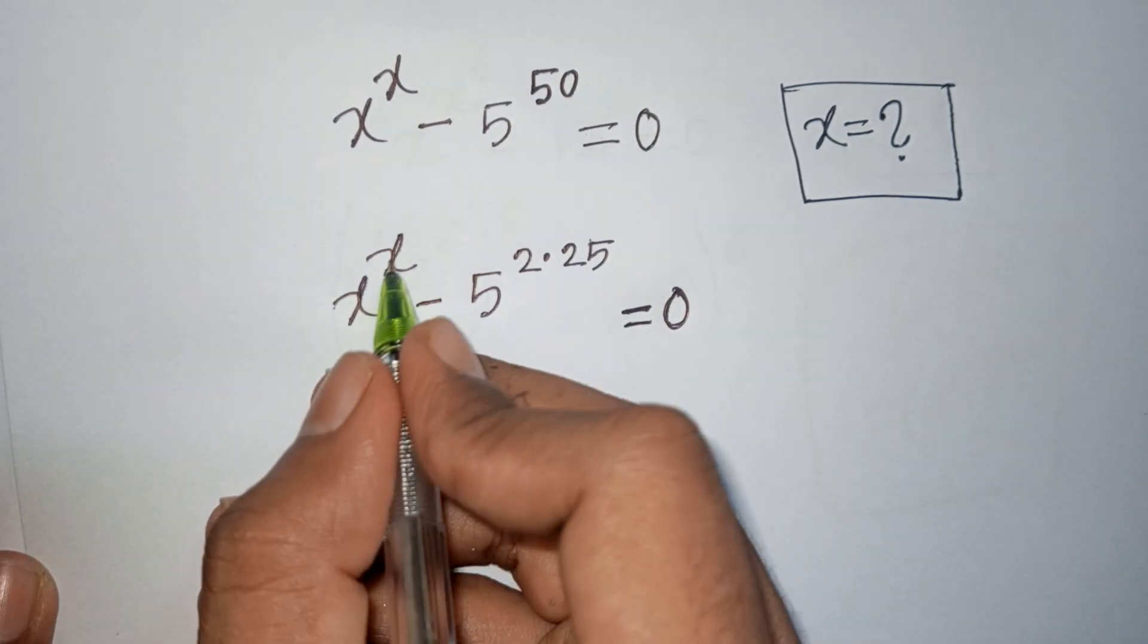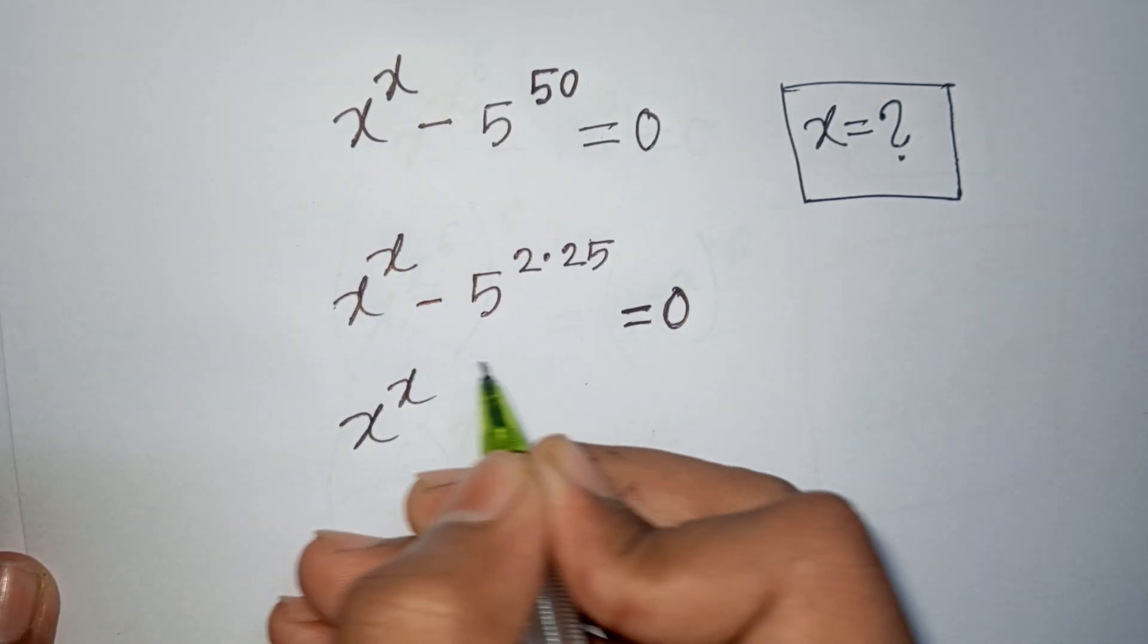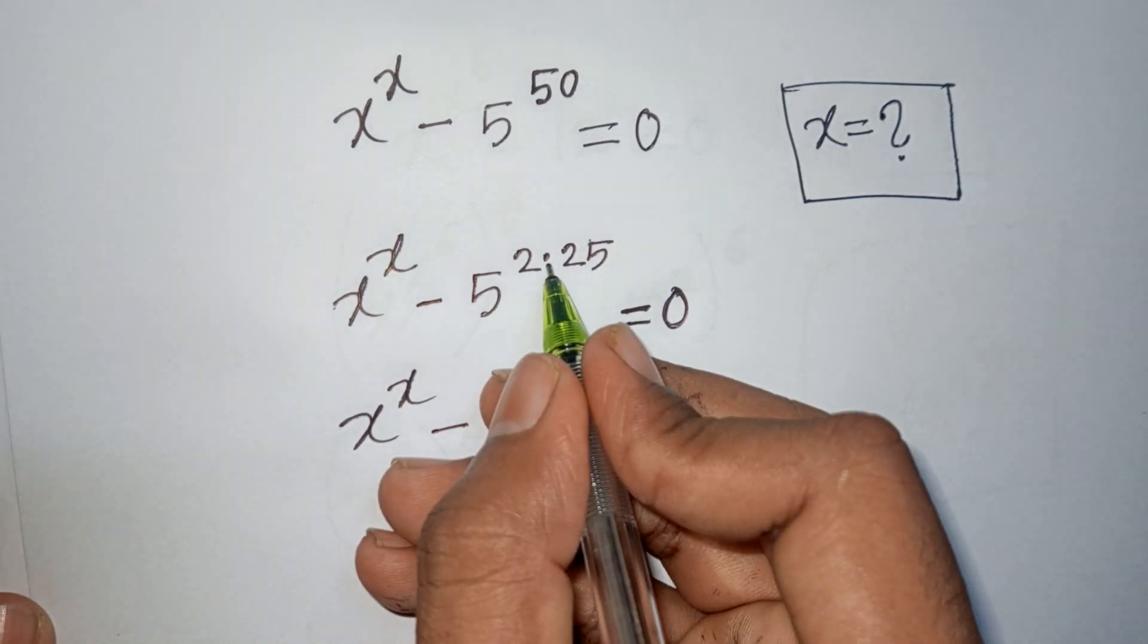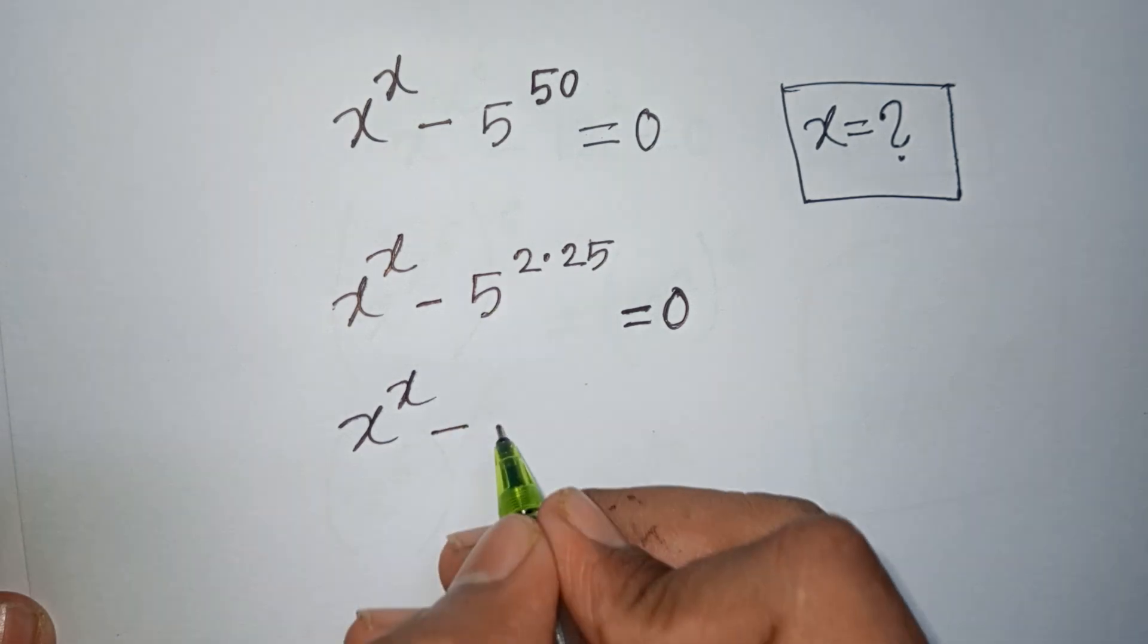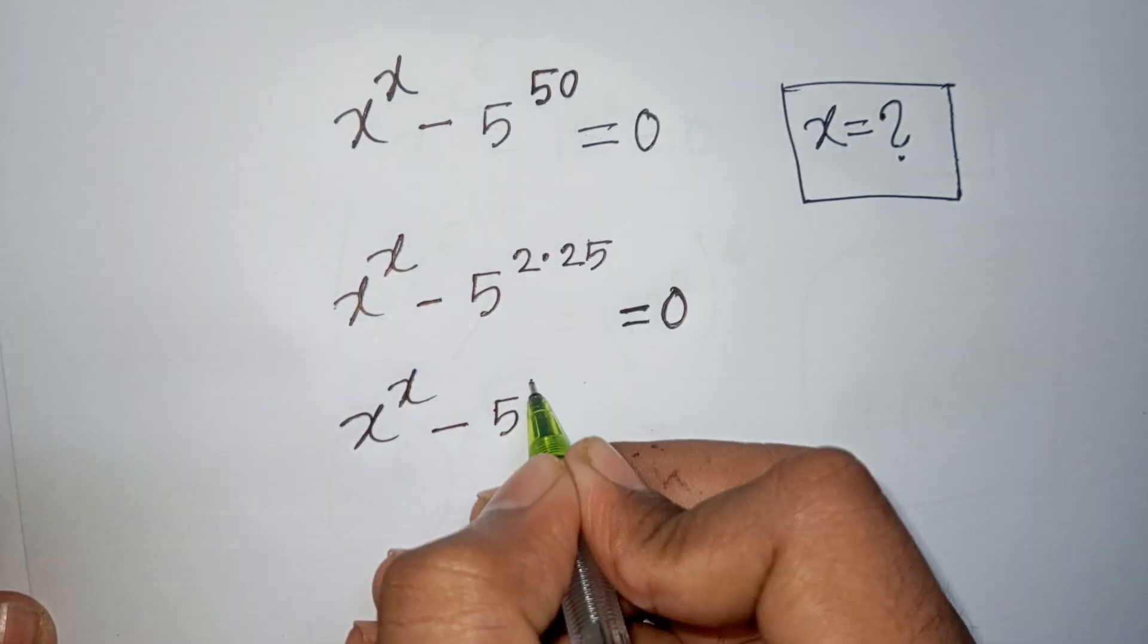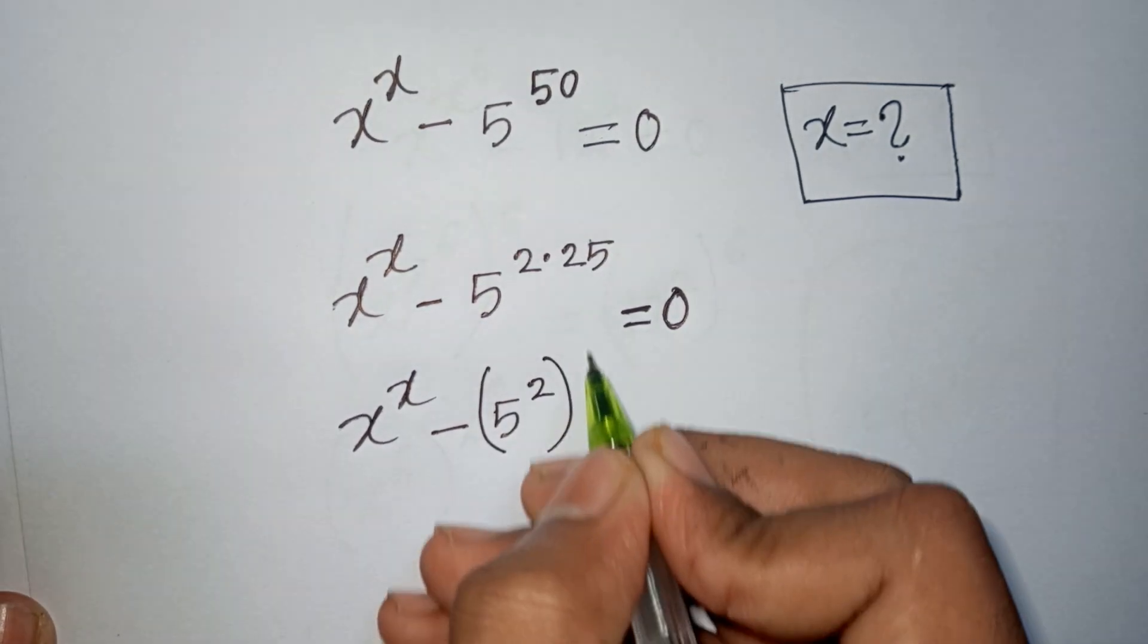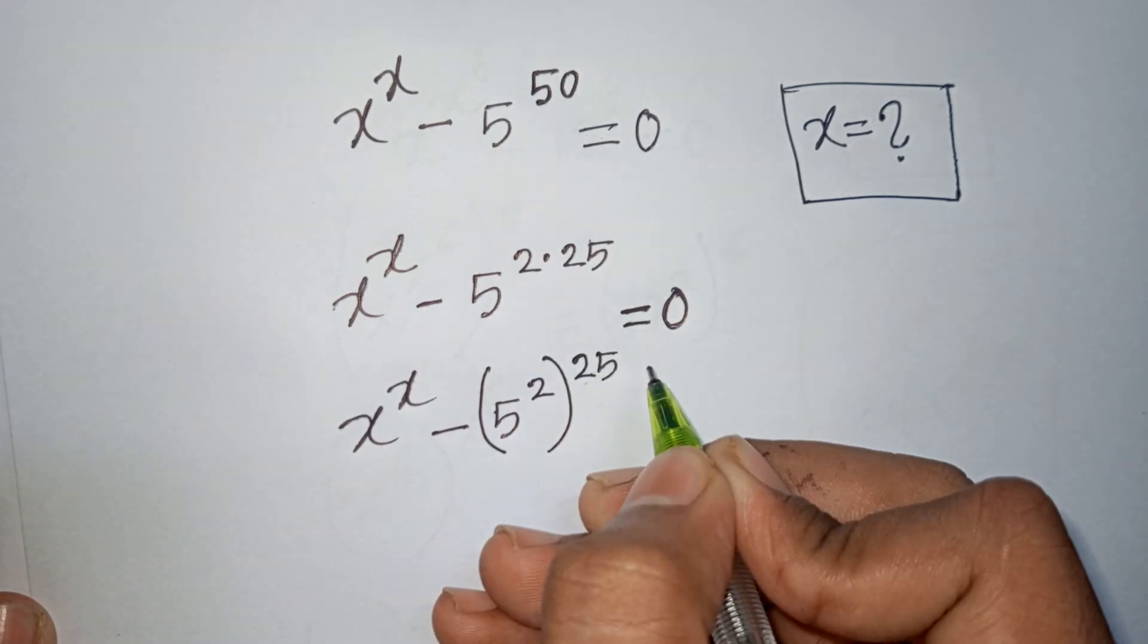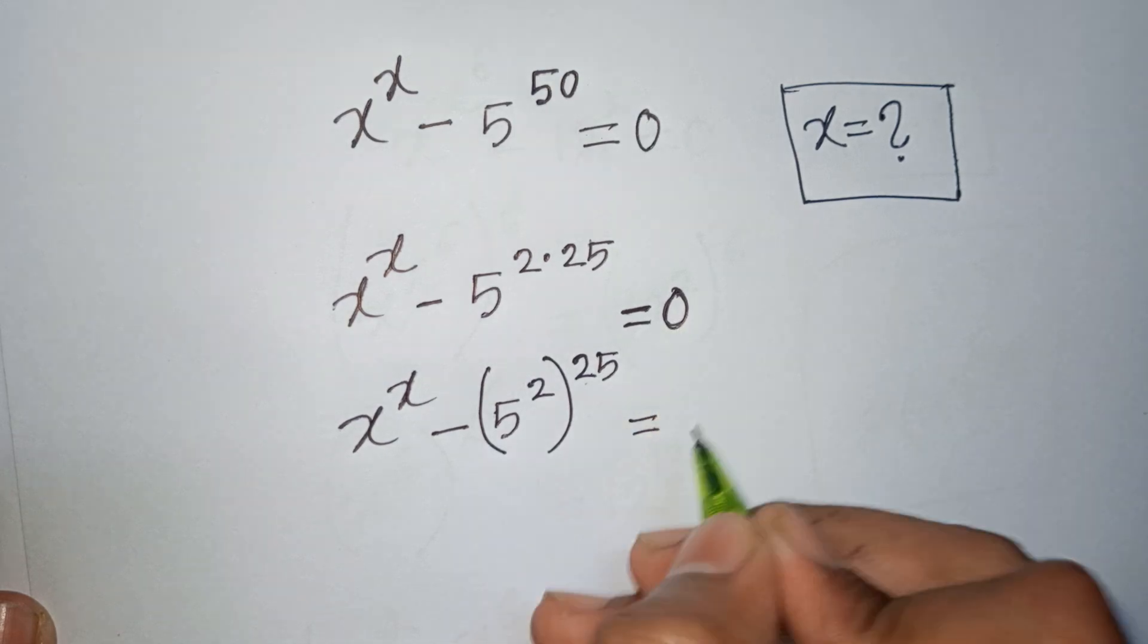After that, we have x^x - 5^(2×25) can be written as x^x - (5^2)^25 = 0.